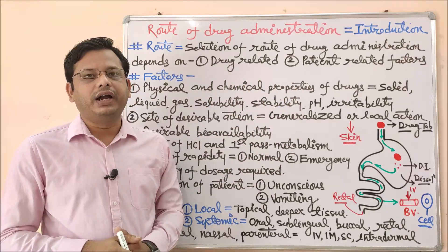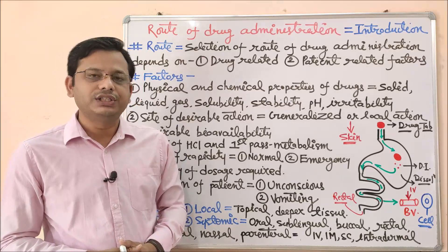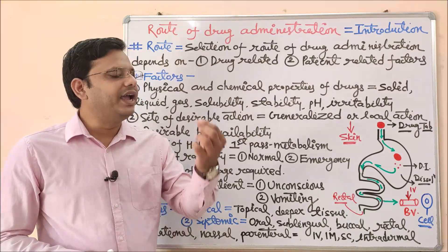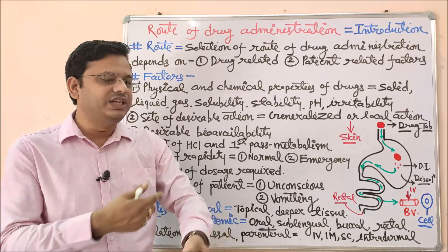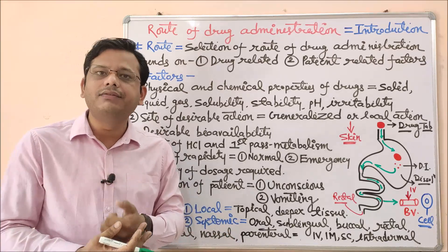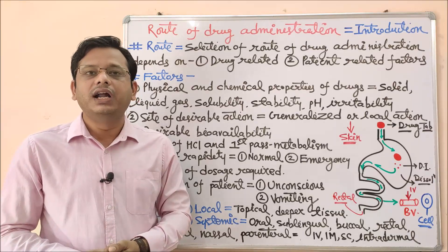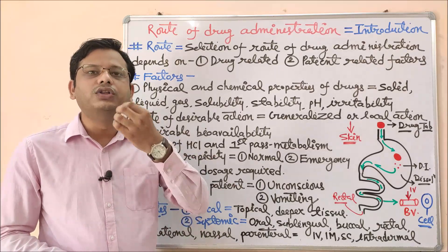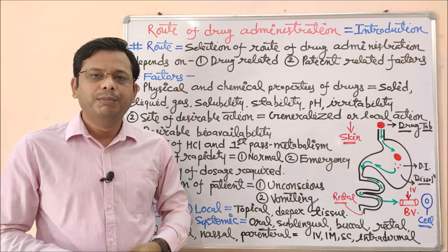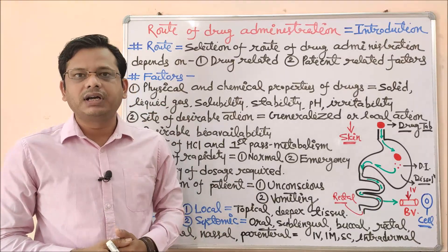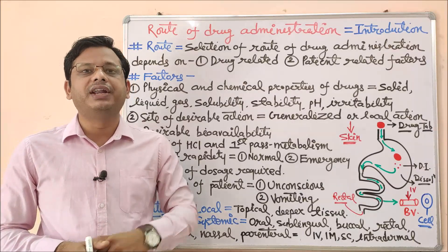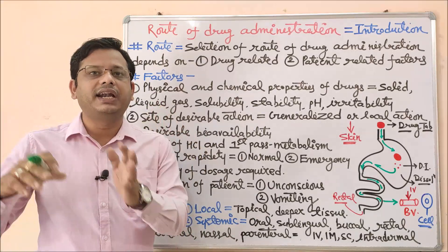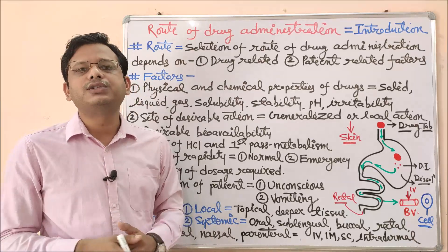Patient-related factors are also important. If a patient is conscious, they can swallow a tablet or accept an injection and respond to almost any route. But if the patient is unconscious, they cannot swallow a tablet. If the patient is continuously vomiting, a tablet taken by oral route will soon be eliminated from the stomach. Other factors include age, body weight, geriatric, adult, or pediatric patient status, allergies, and the specific drug and route involved.